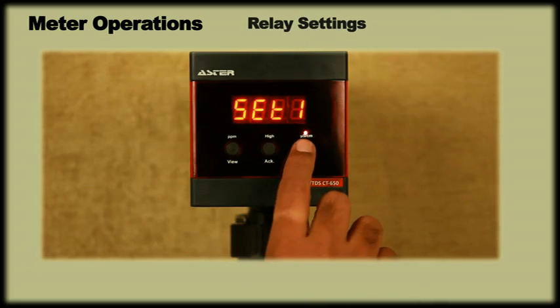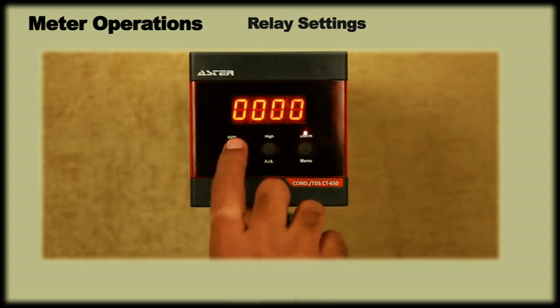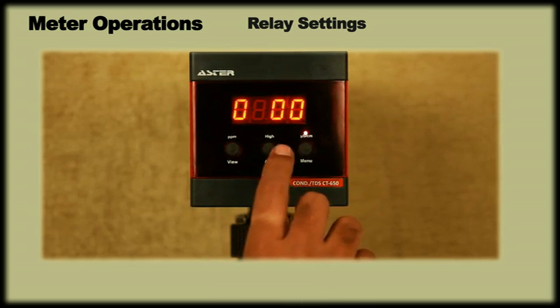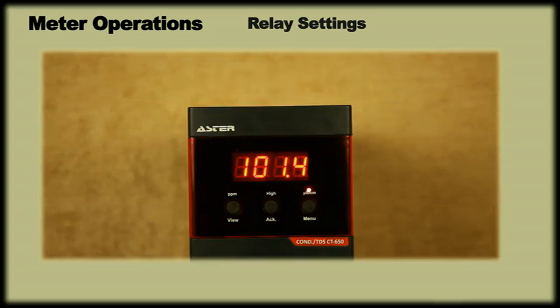The display shows set point. Here we must enter the TDS or conductivity set point of the plant. Using view and ACK keys, enter the value and press menu to save. Please note, if the conductivity goes above this set point value, the meter will send out an alarm with a beep sound and the high LED light will start blinking. In such cases, you can use the ACK key to acknowledge.